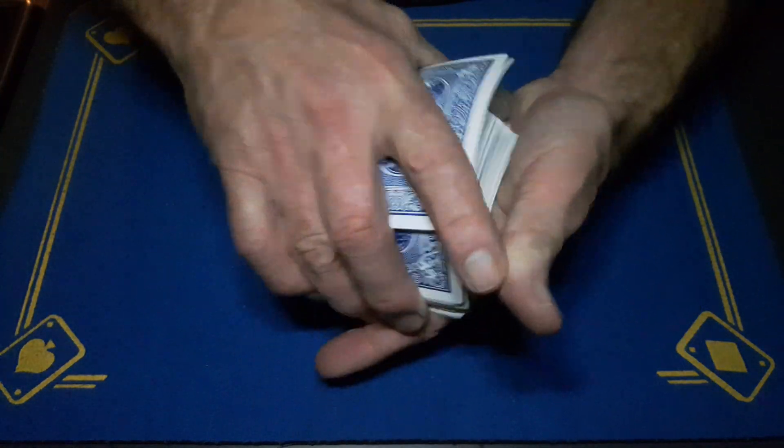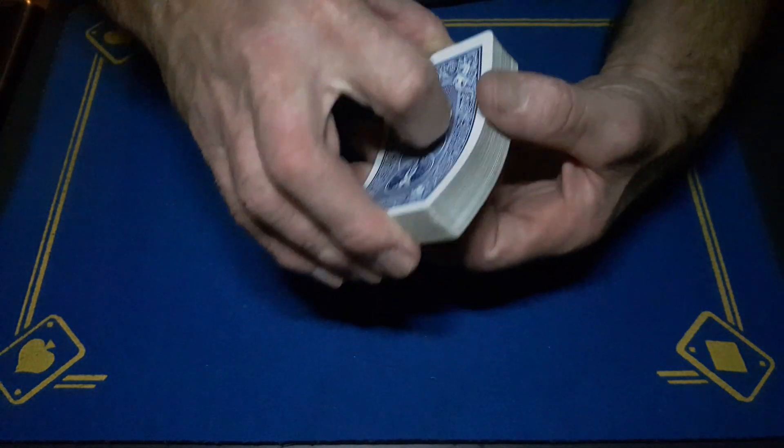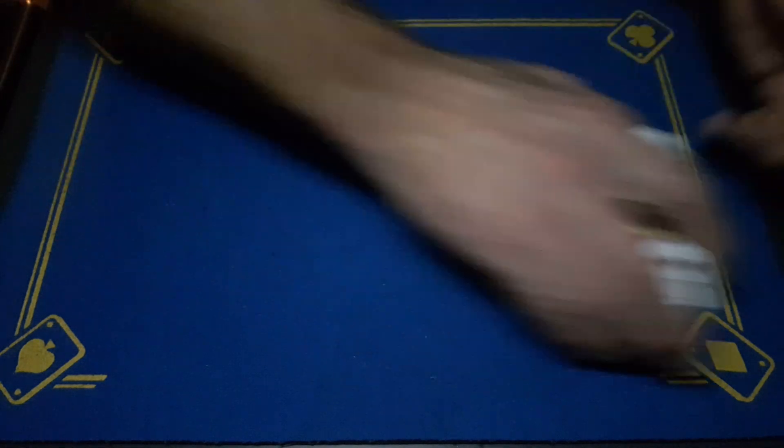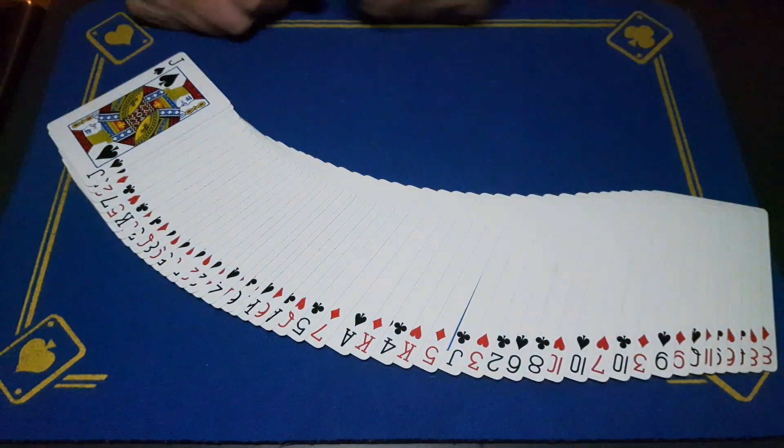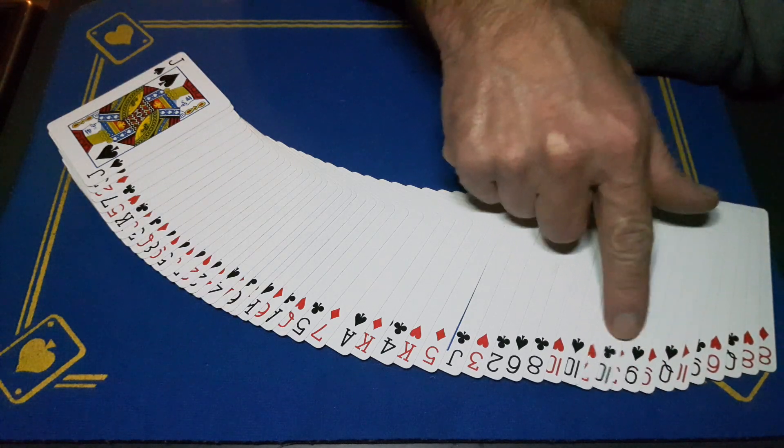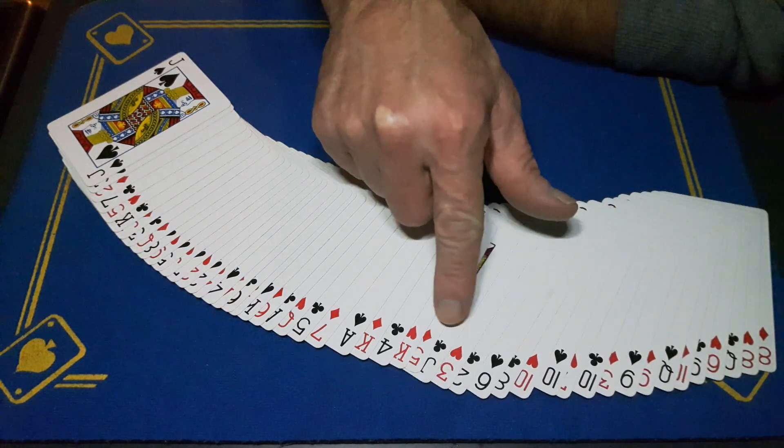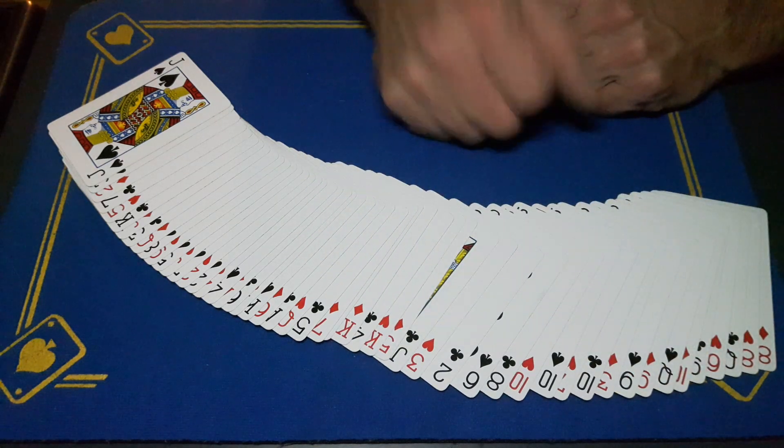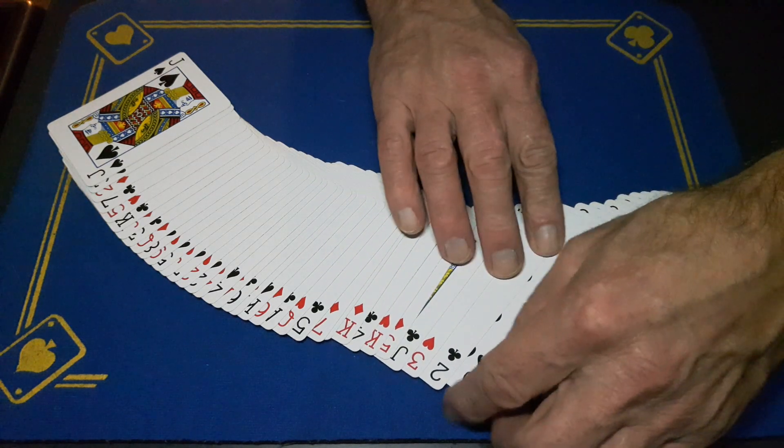So now you've shuffled the cards. You can show the cards are shuffled. Now what's going to happen is when I look through the deck, there will be three black cards together. So I'm going to go through the deck and I'm going to look for where three black cards are together. There are three black cards, so I'm assuming the card I showed you was the six of spades.